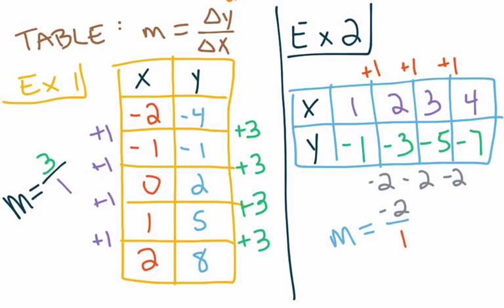So far both examples have had delta x values of plus 1. Typically they will be positive — I will not give you delta x values that are negative. They might not always be positive 1, but I will always make sure my delta x values are positive. Delta y, on the other hand, could very easily be positive or negative, so that's the one you have to be more careful with.